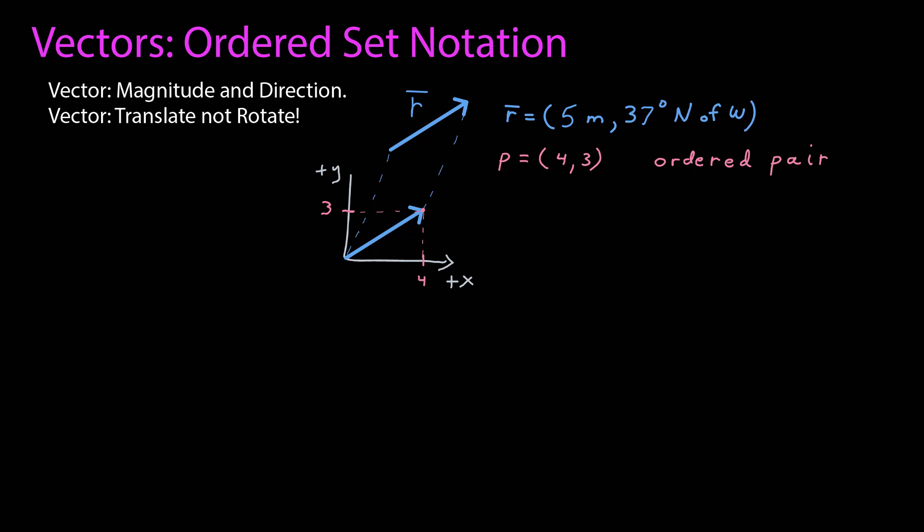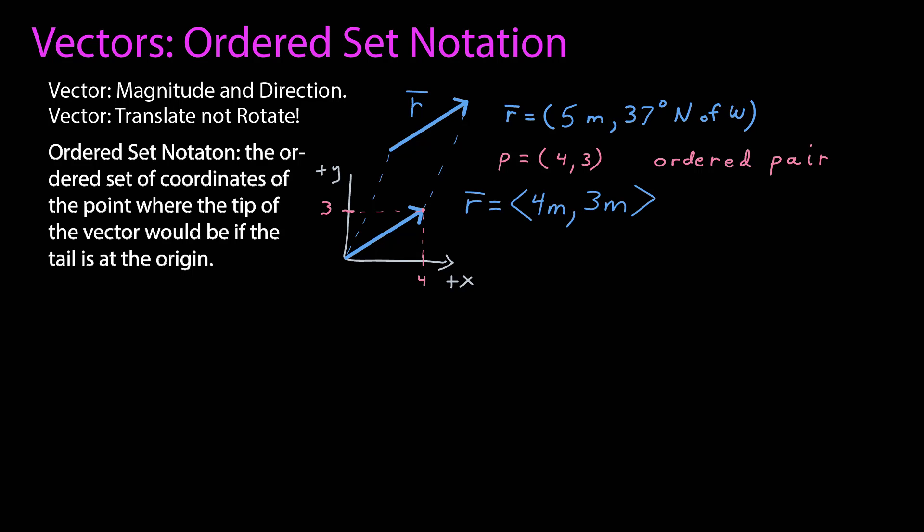My ordered set notation for my vector, then, is just those two numbers with any appropriate units in a set. So I would write my vector this way. The ordered set notation is the ordered set of coordinates of the point where the tip of the vector would be if the tail is at the origin.